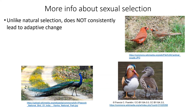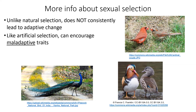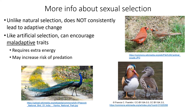Unlike natural selection, sexual selection does not consistently lead to adaptive change or increased fitness — like artificial selection, it can actually encourage maladaptive traits that decrease an individual's chance of survival. It requires extra energy to make a huge tail or sing a complicated song or produce brightly colored pigments — energy that might otherwise be used for finding food or surviving a cold winter. Also, traits that females prefer may make males more susceptible to predation. For example, a peacock's massive tail is heavy and makes it more difficult to fly away from predators, and in other types of birds, brighter colors make them less able to camouflage in their natural environment.